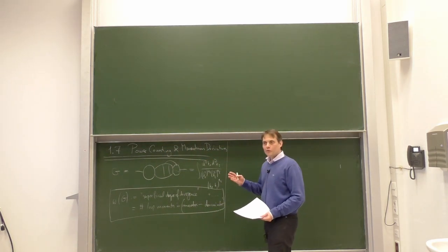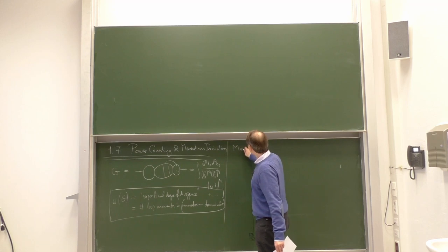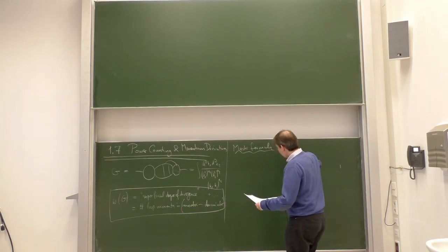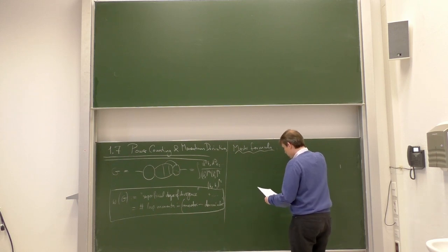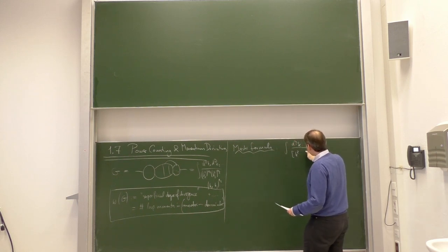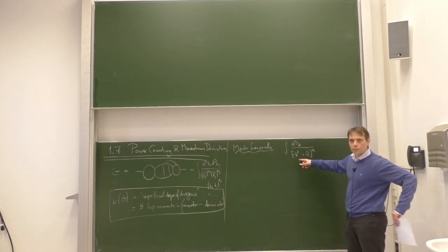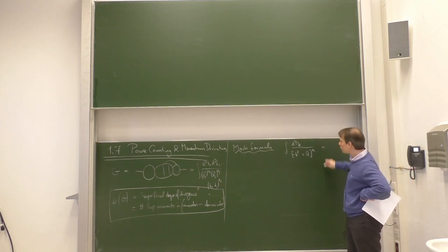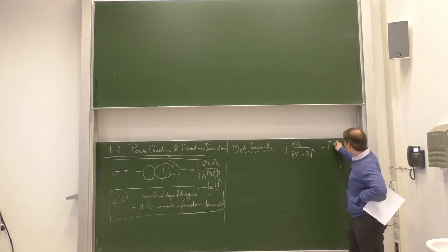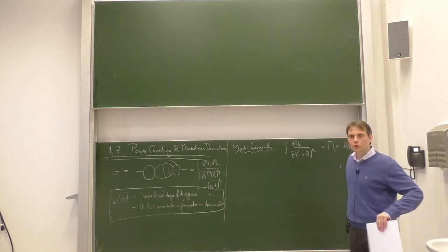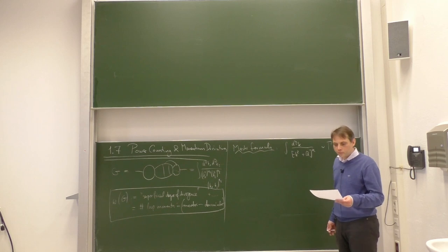Let us look at the master formula, which is the integral d^D K divided by (minus K squared plus Q squared) to some power n. The main point of the master formula is that in the end it contains a gamma function — specifically gamma of (n minus D over 2) — and that gamma function is responsible for the 1/epsilon poles, so it determines whether we have a divergence or not.